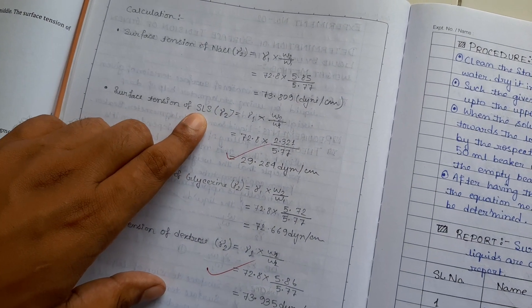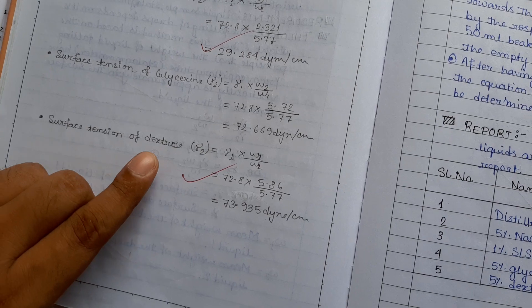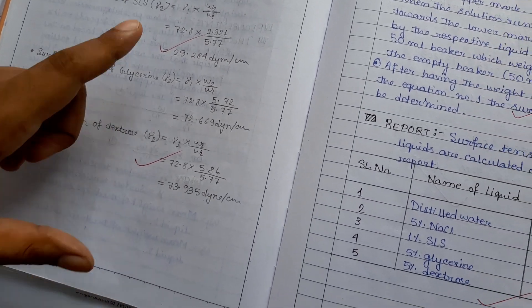Like that, for 1 percent SLS, 5 percent glycerin and for 5 percent dextrose, you have calculated the value.